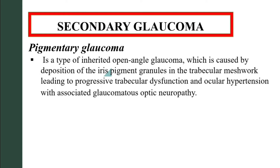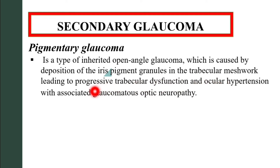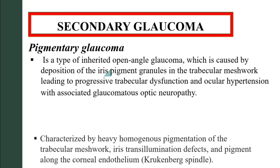Starting with pigmentary glaucoma: pigmentary glaucoma is a type of inherited open-angle glaucoma caused by deposition of iris pigment granules in the trabecular meshwork, leading to progressive trabecular dysfunction and ocular hypertension with associated glaucomatous optic neuropathy. Secondary glaucoma presents a classic triad characterized by homogeneous pigmentation of the trabecular meshwork.